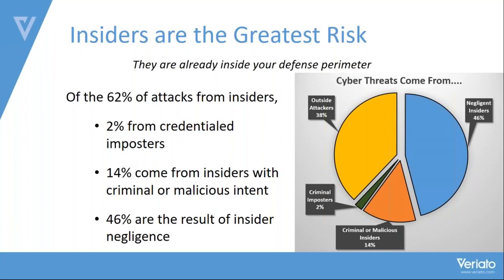40% of insider threats result from insider negligence. Looking at that number, 46% of the 62% insider threat are just people with no nefarious intent whose negligence or lack of attention to cybersecurity makes them the weakest link in the security chain. We have to figure out how to plug that weak link — not malicious, just mistakes. And mistakes are going to cost your organization a lot of money.